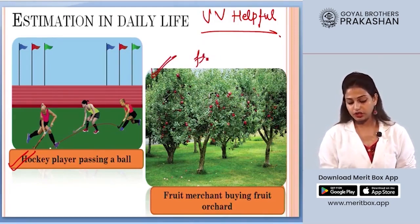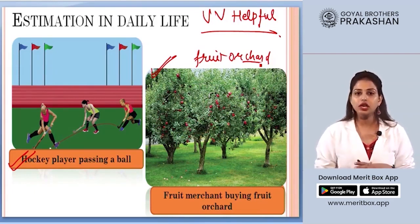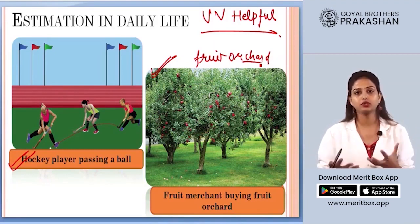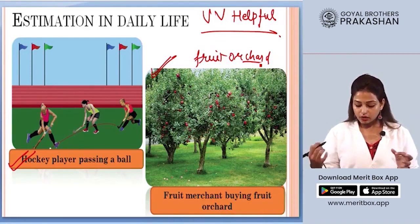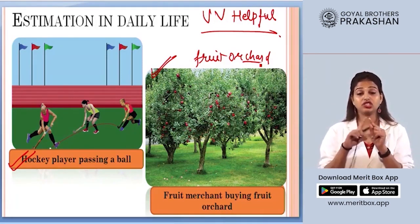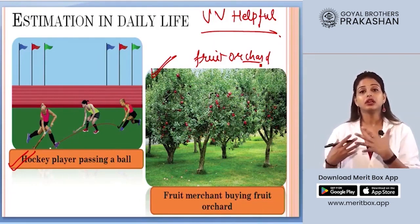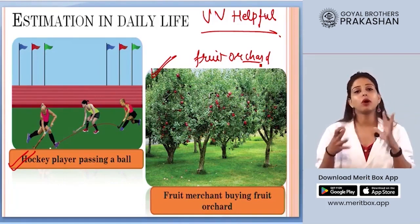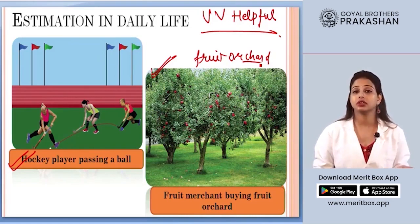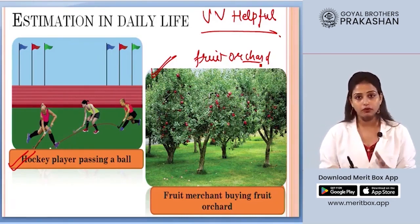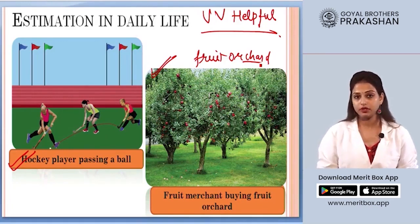Another example is a fruit orchard. If someone wants to buy a large fruit garden to sell fruit at scale, they cannot count each tree and each fruit individually. Instead, they estimate based on the average number of fruits one tree bears and the number of trees. So you depend on estimation for such large-scale and time-consuming counts. These examples show how estimation is still very helpful, even if it is not perfectly reliable.